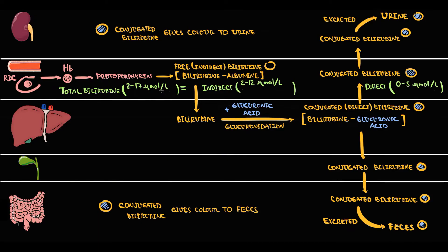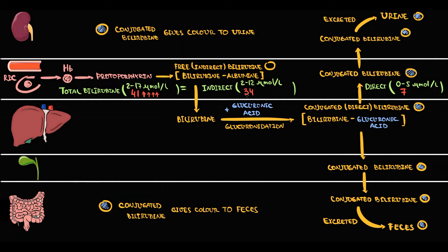For example: total bilirubin is 41, indirect bilirubin is 34, and direct bilirubin is 7 micromoles. The level of total bilirubin is significantly higher than normal, and looking at fractions we see this elevation is caused by increasing free bilirubin. Most probably the cause is increasing free bilirubin formation, and the most common factor is destruction of red blood cells — hemolysis.